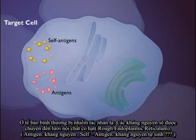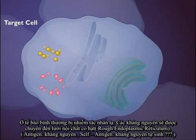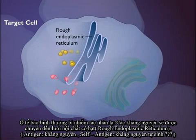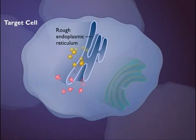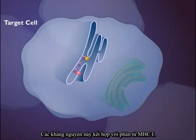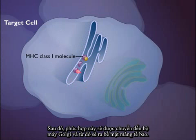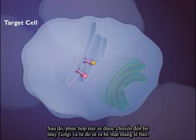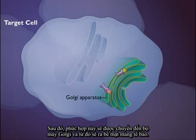The antigens are then transported into the rough endoplasmic reticulum, where they combine with class I MHC molecules. The combination is then transported to the Golgi apparatus and from there to the plasma membrane.